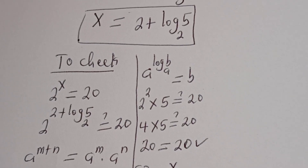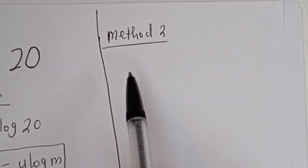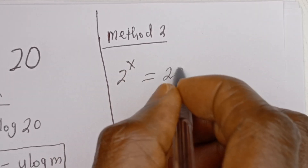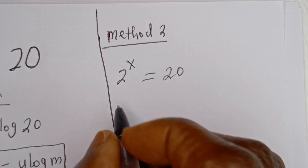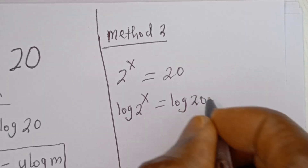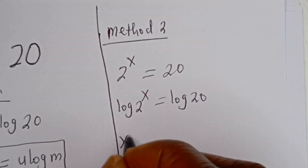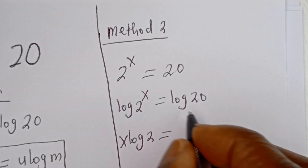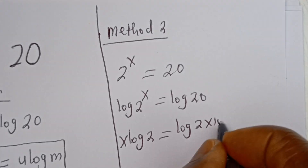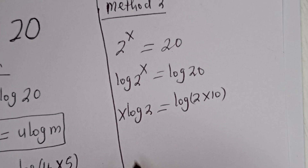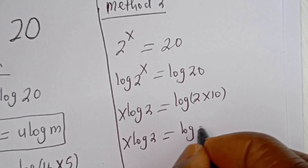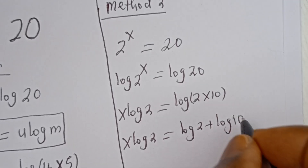Let's solve using another method — we can call this Method 2, but it is similar to the first method. Then 2 to the power of s is equal to 20. Let's take the log of both sides. We have s log 2 is equal to log 20, which can be written as log 2 multiplied by 10. Then we have s log 2 is equal to log 2 plus log 10.